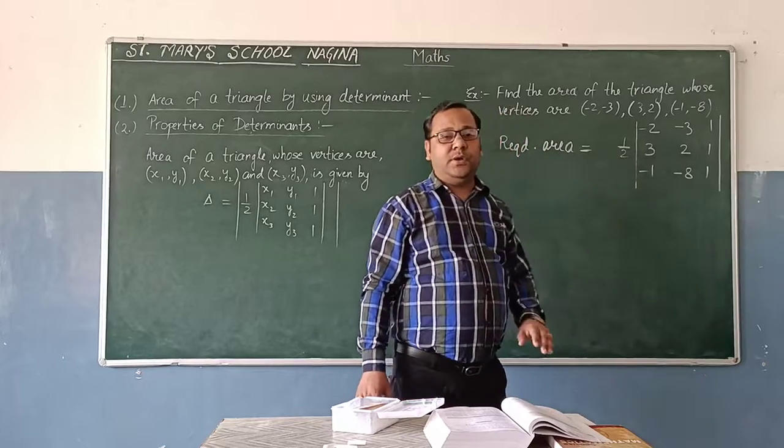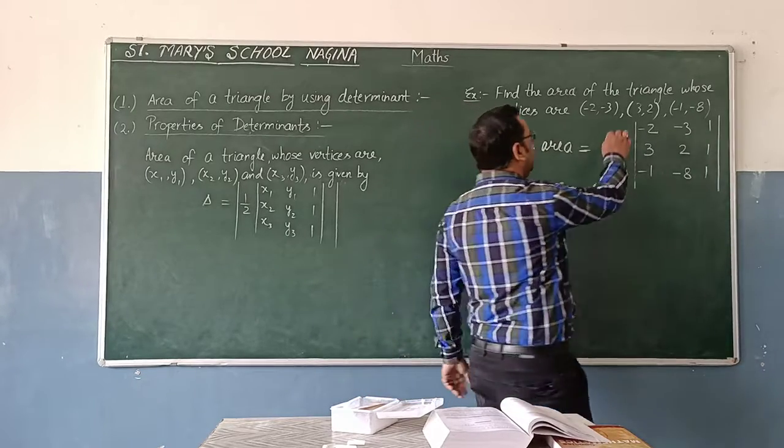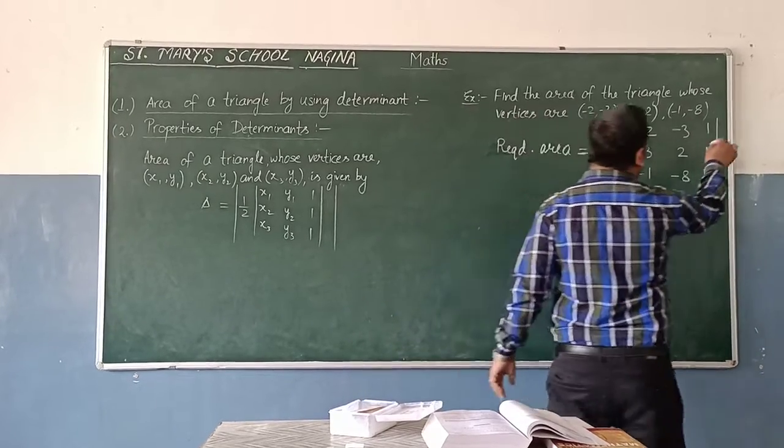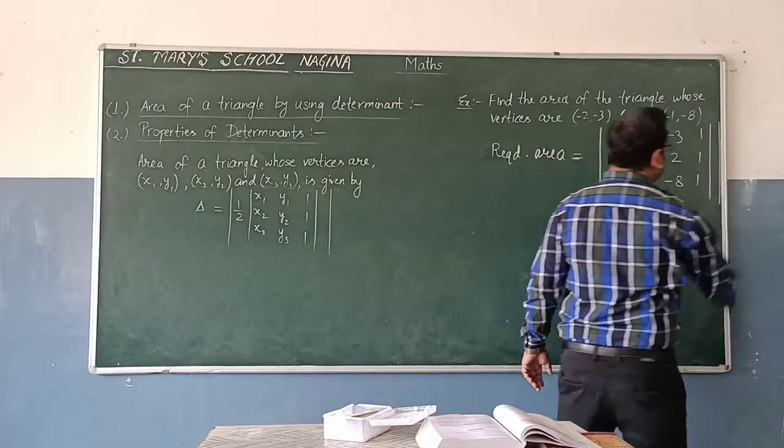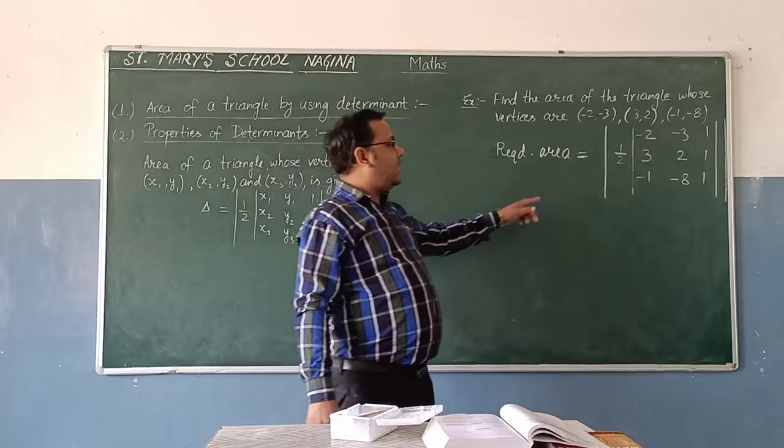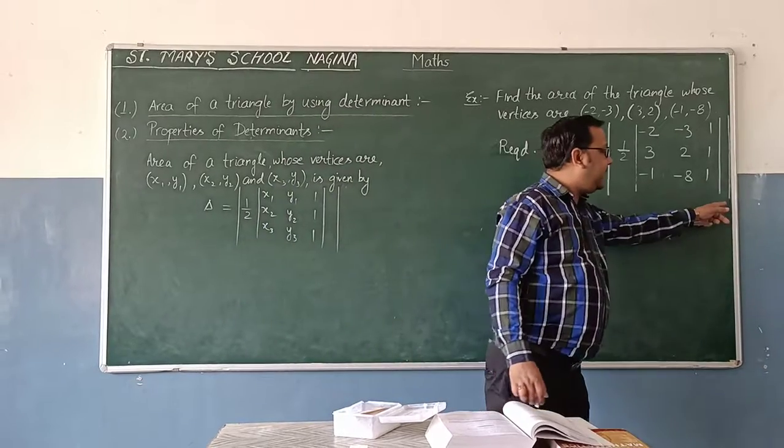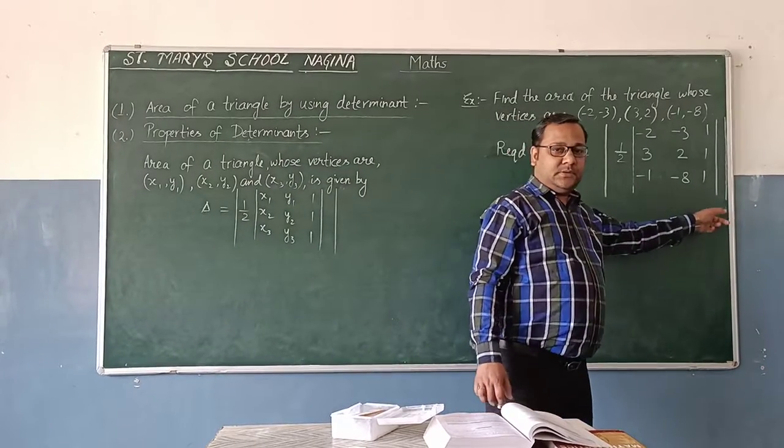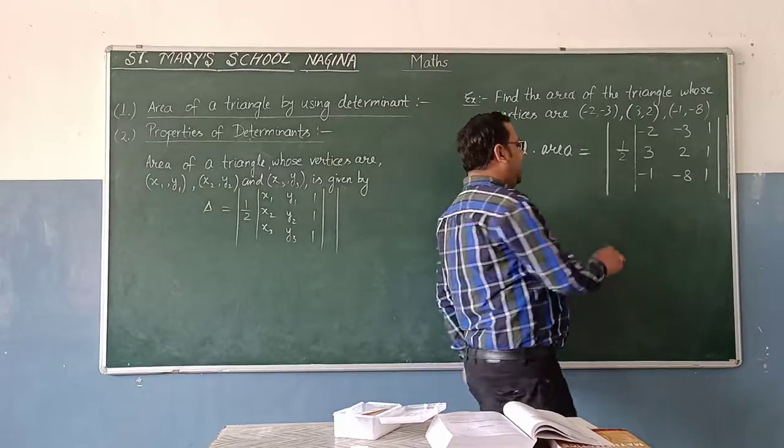Outside the determinant, 1 upon 2 in multiplication will come. And these two outer vertical bars denote the modulus, because area is positive quality. So these outside vertical bars denote modulus to find the positive value of area.